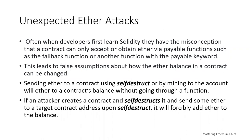Typically when Ether is sent to a contract, it will cause either the fallback function or another payable function defined in the contract to be executed. However, there are some exceptions where Ether can be sent to a contract without any code being executed. So if you design your contract to rely on code execution for all the Ether that comes in, you could be vulnerable if someone sneaks Ether into a contract unexpectedly.